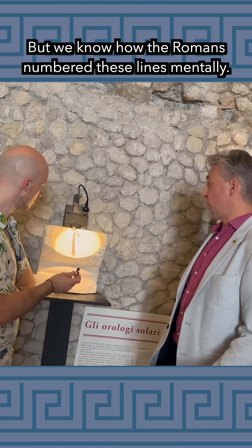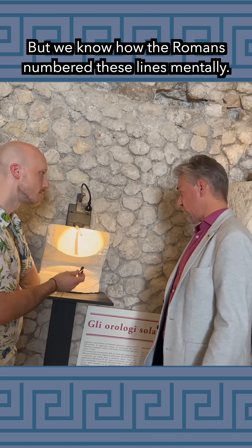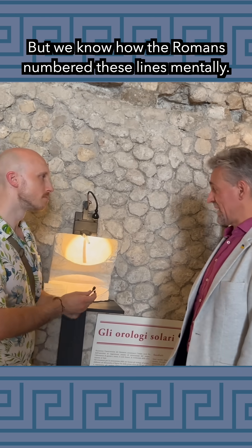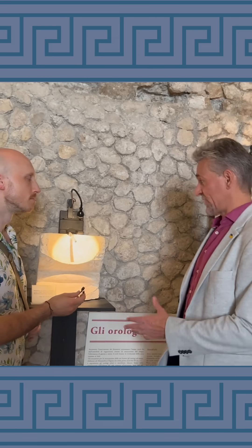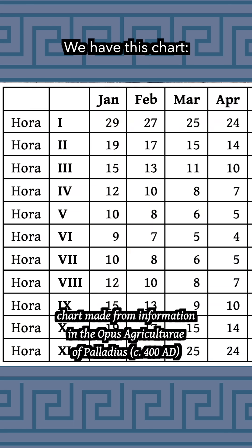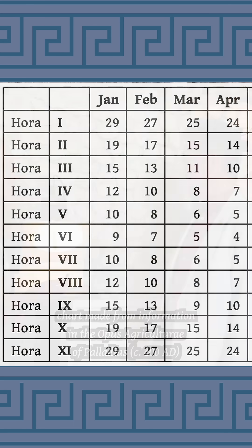But we know how the Romans numbered these lines mentally. For example, we have this chart, which is based on information in Opus Agriculturae by Pallarius, which is from around 400 AD.